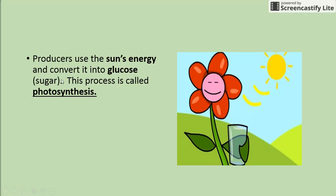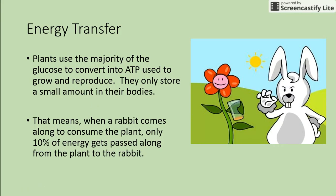Producers use the sun's energy and convert it into glucose — this process is called photosynthesis, which we learned back in unit three. Plants use the majority of that glucose to convert into ATP, which they use to grow, reproduce, and make more plants. They only store a small amount in their bodies, so when a rabbit eats the plant, only ten percent of the energy gets passed along to the rabbit.